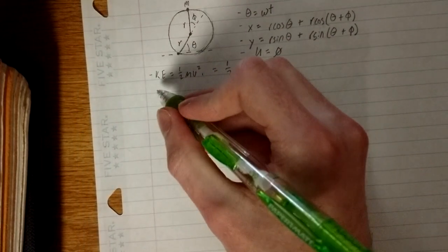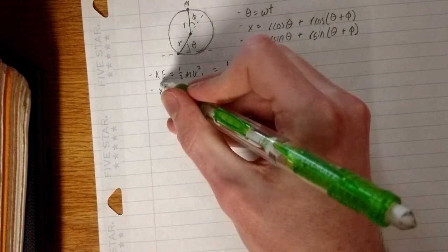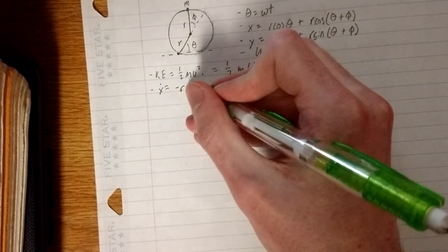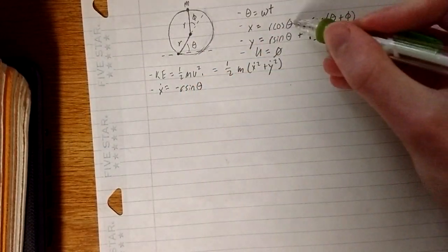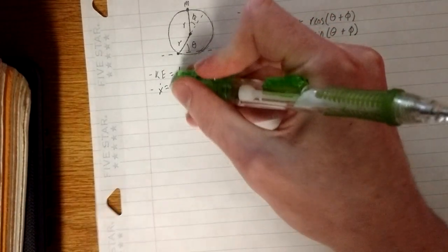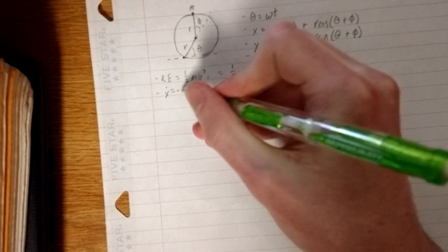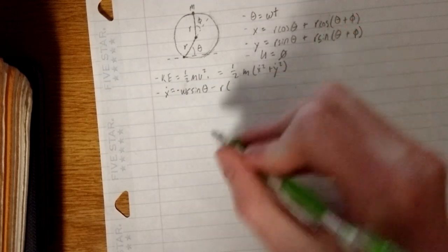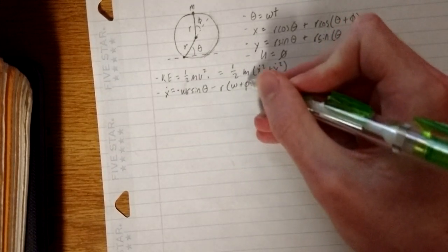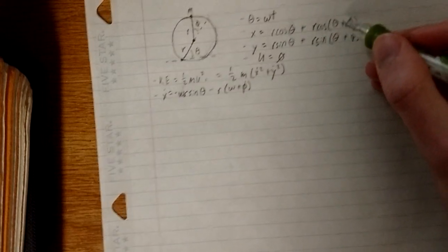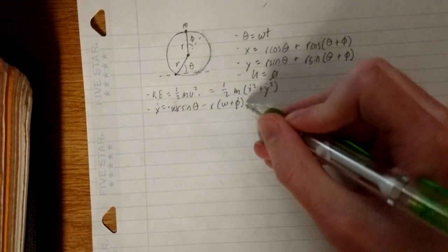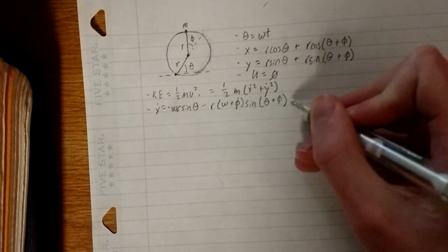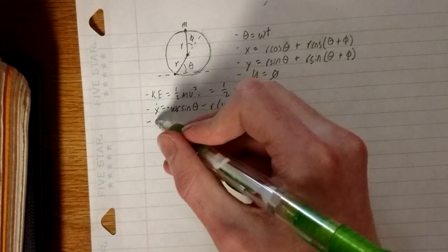So we know, just from elementary calculus, x dot equals, let's see, the derivative of this is negative r sine theta, but theta is omega t. So we're going to get a spare omega out in front. And then minus our quantity omega plus phi dot, because of course both theta and phi depend on t, times the sine of theta plus phi.